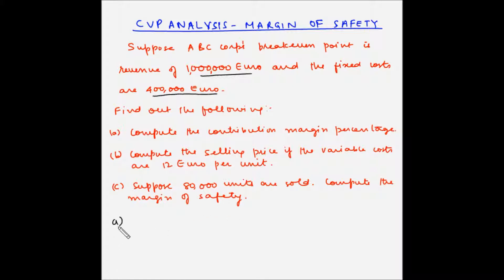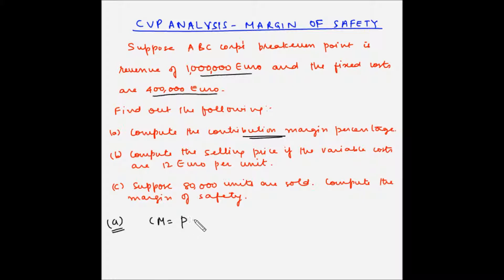Let us first take part A — we are asked to find out the contribution margin percentage. Contribution margin is the difference between the selling price and the variable cost, which initially goes towards the recovery of the fixed cost. Once the entire fixed costs have been recovered, the contribution margin contributes towards profits. So contribution margin is the difference between the unit selling price and the unit variable cost.